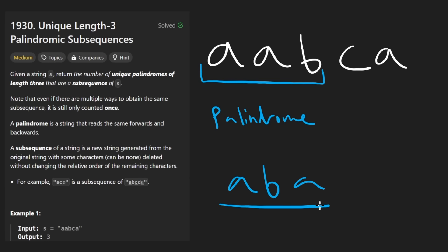A, b, a is a palindrome. A, b, c is not a palindrome. But we're not looking for substrings this time. We are looking for subsequences.